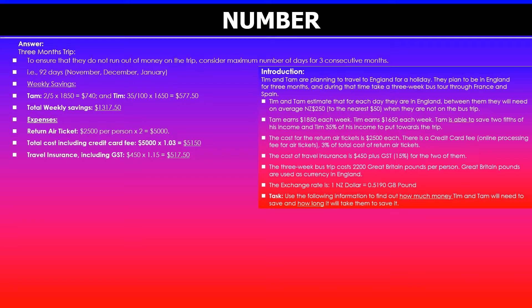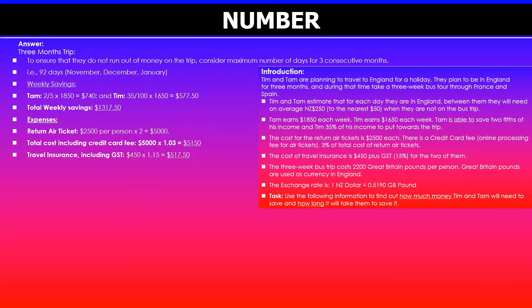We are also given information about travel insurance — it says $450 plus GST. We will add GST to the amount given, and it's for both of them so we don't need to double this. So $450 times 1.15 — that's the multiplier because we're adding 15% to the existing amount. This gives $517.50.